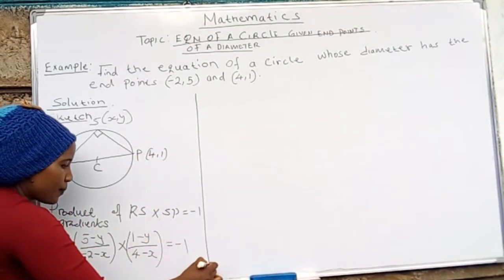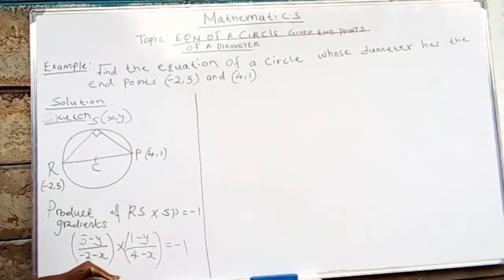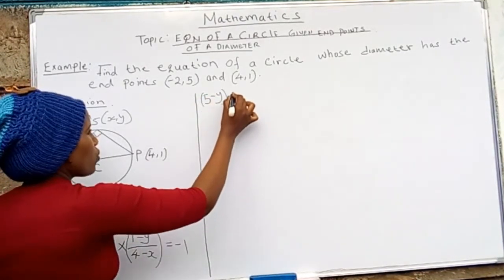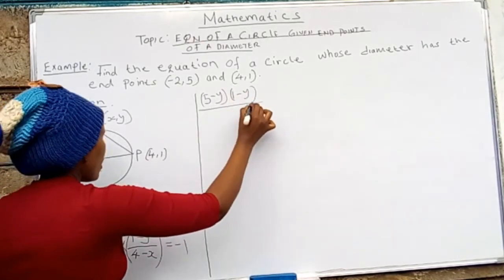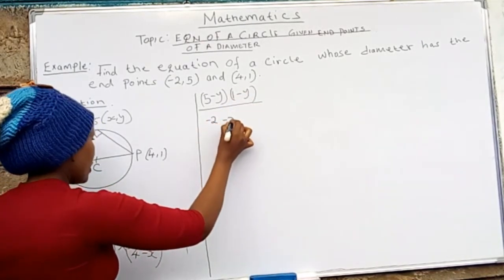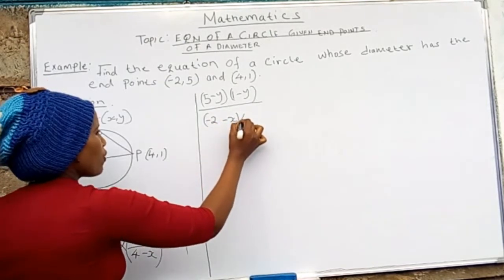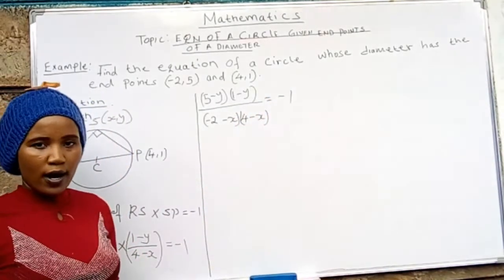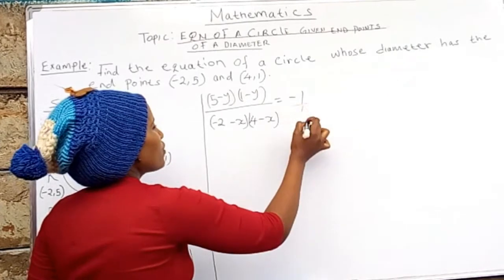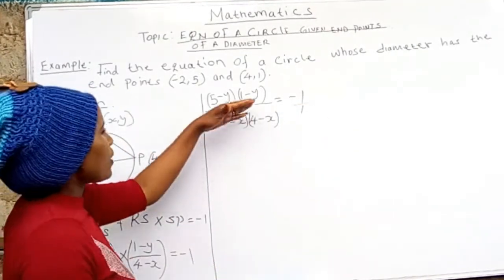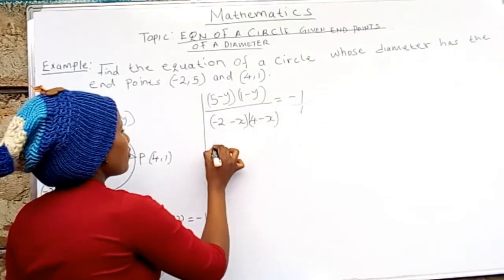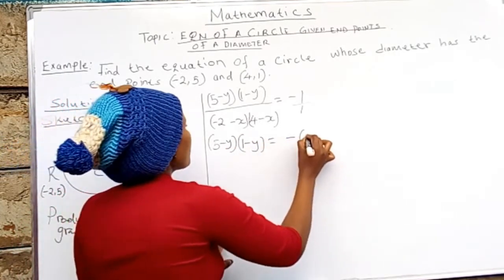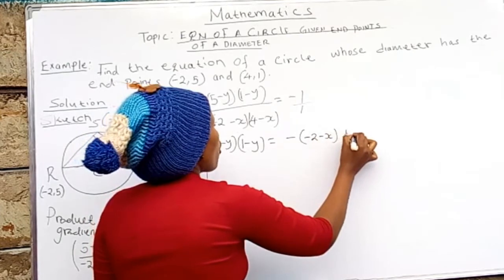So let us proceed. If I multiply this one, I am going to get (5 - y) times (1 - y) over (-2 - x) times (4 - x) is equivalent to -1. Maybe we assume this is over 1. Now what we are going to do, we multiply, we cross multiply. We shall have (5 - y)(1 - y) equals (-2 - x)(4 - x).